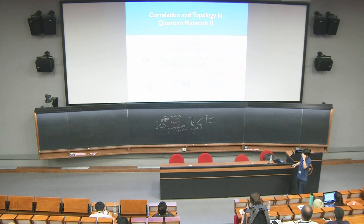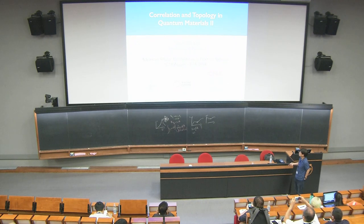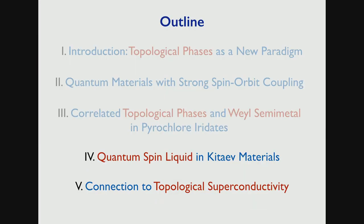Thank you very much. This is the second part of the discussion about correlation and topology in quantum materials. I covered most of the important topics from last time, so now I'm going to switch gears. In the previous example, I was mostly talking about band topology — essentially things like topological insulators and Weyl semi-metals — which are properties of the band structure.